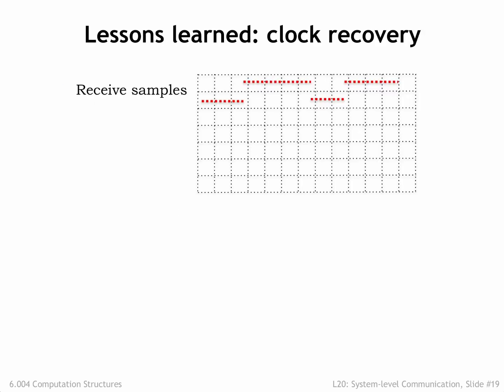If we're sending digital data, does that mean we also have to send a separate clock signal so the receiver knows when to sample the signal to determine the next bit? With some cleverness, it turns out we can recover the timing information from the received signal, assuming we know the nominal clock period at the transmitter.